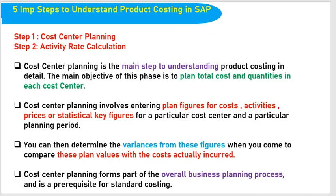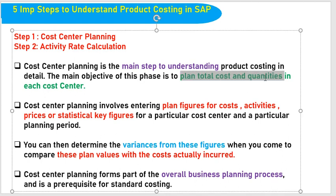While studying cost center accounting, we come across cost center planning. In this topic, we are going to plan the total cost and quantities. Cost center planning is the main step to understand product costing in detail. Without cost center planning, there should not be product costing. In order to estimate each product cost, material cost, labor cost, and other expenses, cost center planning is very important. The main objective of this phase is to plan total cost and quantities in each cost center.